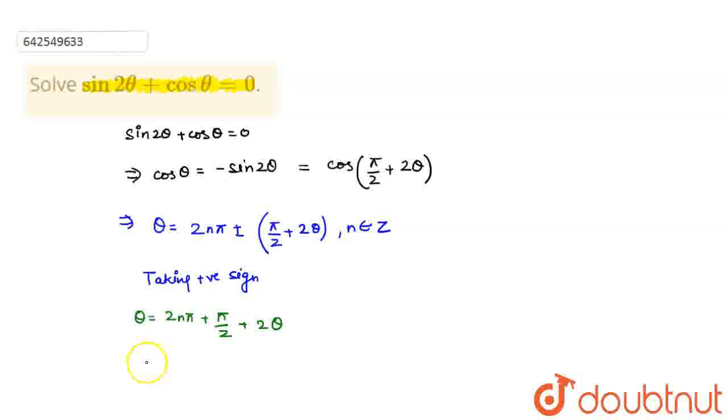And so, simplifying, I get theta is equal to 2n pi minus pi by 2 for all values of n belonging to Z.